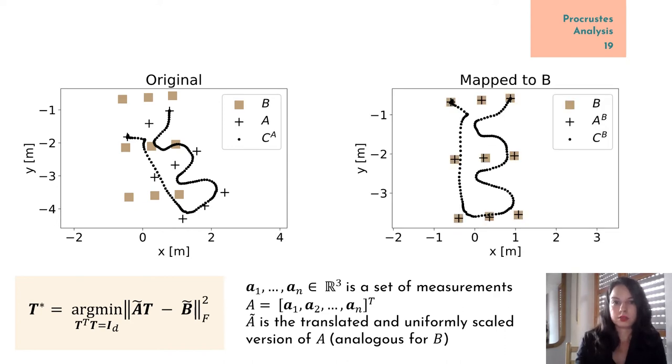After computing the transformation, we apply it on the sets A and C, and we obtain the figure on the right, where the training points are almost perfectly overlapped and the test points follow the original trajectory.